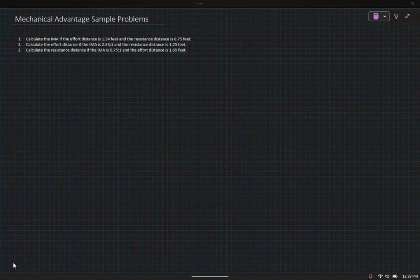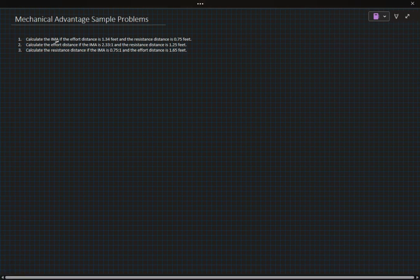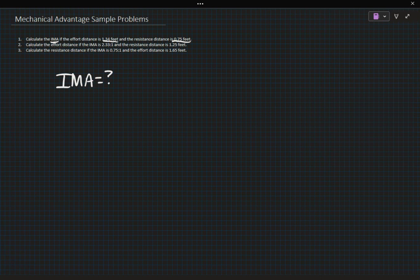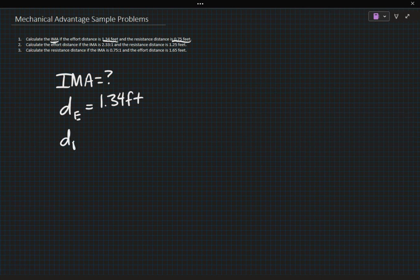The first thing that I want to do in this problem is look at the information that we are given and make a list. So they are asking us to calculate the IMA. IMA stands for ideal mechanical advantage and they're telling us that the effort distance is 1.34 feet. The resistance distance is 0.75 feet. So with those three things I can make my list. IMA is what I am looking for, that's my unknown. The effort distance we define as DE and that's 1.34 feet. The resistance distance is DR and that's 0.75 feet.